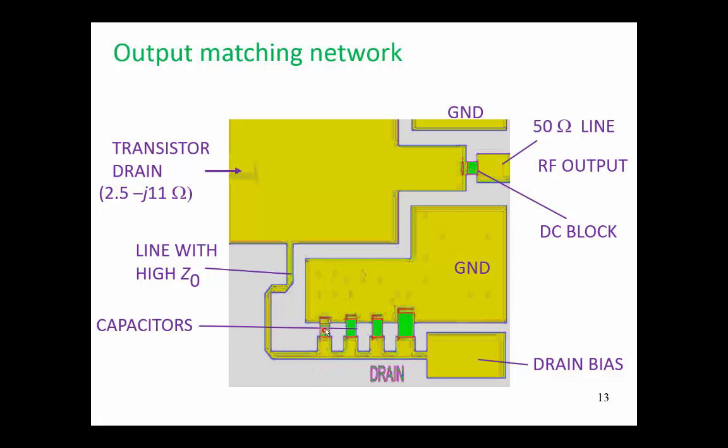We want to present an RF short circuit at this point so that when we go along our lambda on 4 long line, we present an RF open at that point. But it won't be perfect. We need to include this in our RF design.